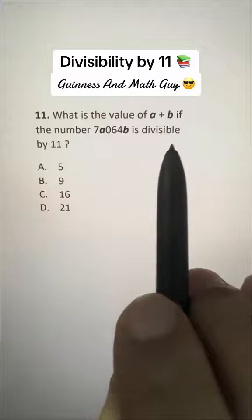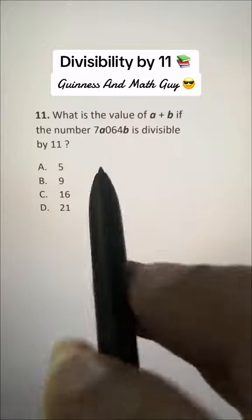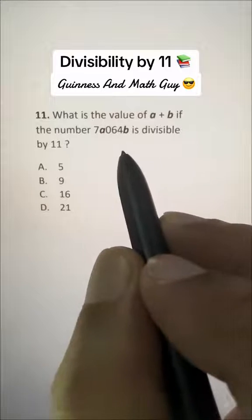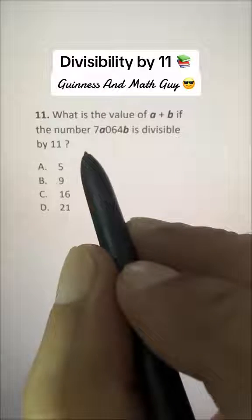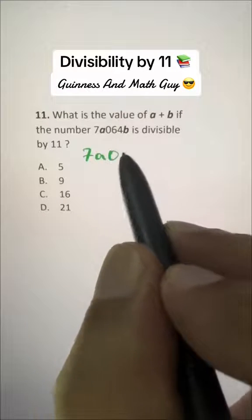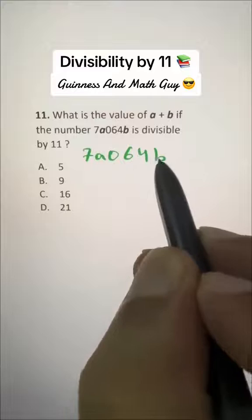What is the value of A plus B if the number 7A064B is divisible by 11? Let's write this number again: 7A064B.